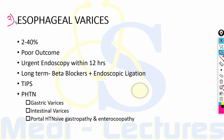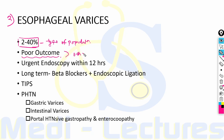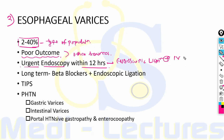Esophageal varices are responsible for 2 to 40% of all upper GI bleed hospitalizations, depending on the population type. Patients with variceal hemorrhage usually have a poorer outcome than patients with other sources of upper GI bleed such as peptic ulcer or Mallory-Weiss tear. In cirrhotics with upper GI bleed, urgent endoscopy within 12 hours should be done, followed by endoscopic ligation plus IV vasoactive medications.